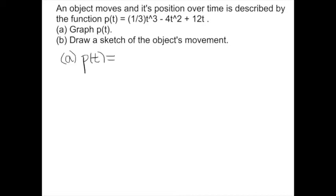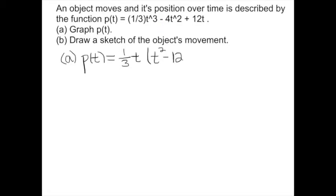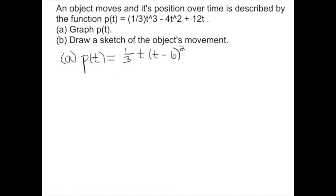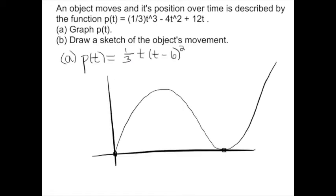How do you graph a cubic polynomial? This polynomial is factorable. I'm going to factor out (1/3)t from every term. Taking out a third and one of the t's leaves t squared. For the second term, taking out a third means multiplying 4 times 3, giving minus 12t. Finally, plus 36. You can double-check: (1/3) × 36 = 12. Factoring further gives (1/3)t(t − 6)². So it's a cubic polynomial with a double root at t = 6. This is the t-axis and p(t) function.